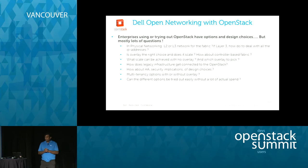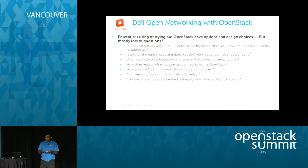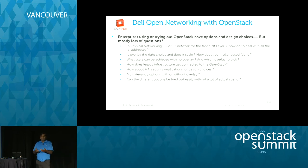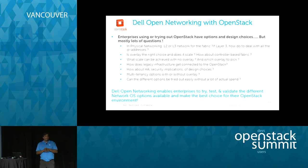During the run-up to this presentation, a lot of questions came up around physical networking for OpenStack: Should I use Layer 2? Traditionally enterprises have used Layer 2 — how do I go to Layer 3? Do I need overlay? What about security implications, HA, multi-tenancy? Can we try this out without spending a lot of money first for a proof of concept? Dell Open Networking helps answer these questions and lets you evaluate different OS options on the switches to find what works best for your overall OpenStack solution.